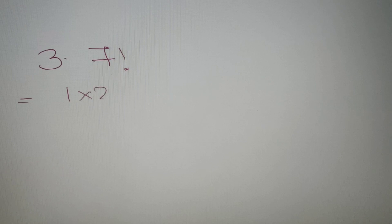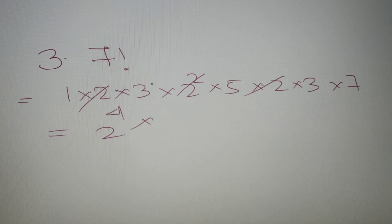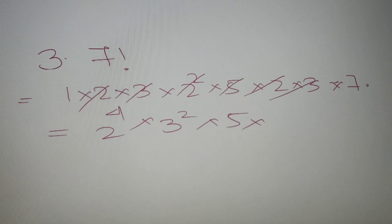Now for our question, 7! can be written as 1 × 2 × 3 × 4 × 5 × 6 × 7, where 4 = 2², and 6 = 2 × 3. So the full prime factorization becomes 2^(1+2+1) × 3² × 5 × 7, which is 2⁴ × 3² × 5 × 7. There are four 2s, two 3s, one 5, and one 7 in the factorization of 7!.